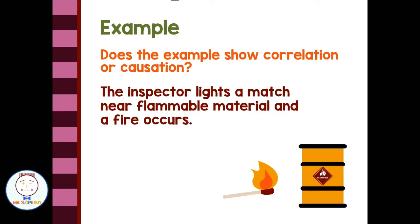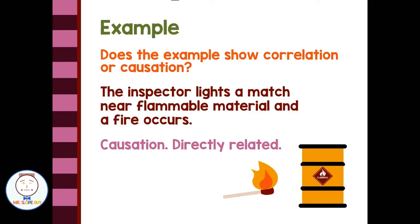Does this example show correlation or causation? The inspector lights a match near flammable material and a fire occurs. Those are causation — they are directly related.